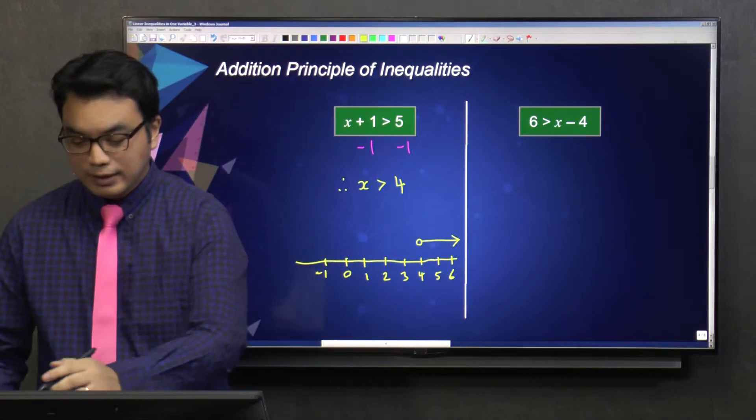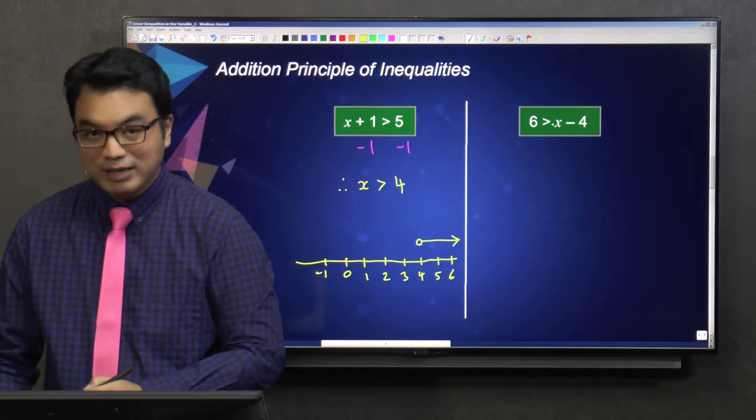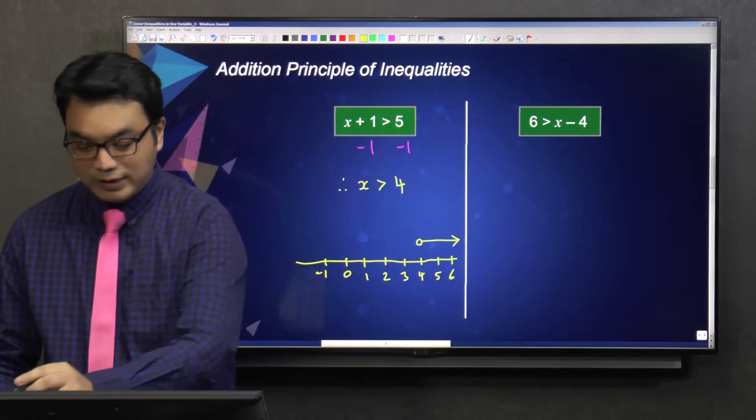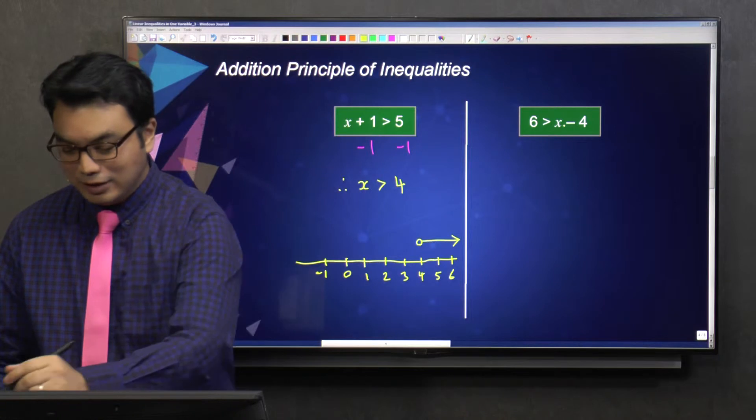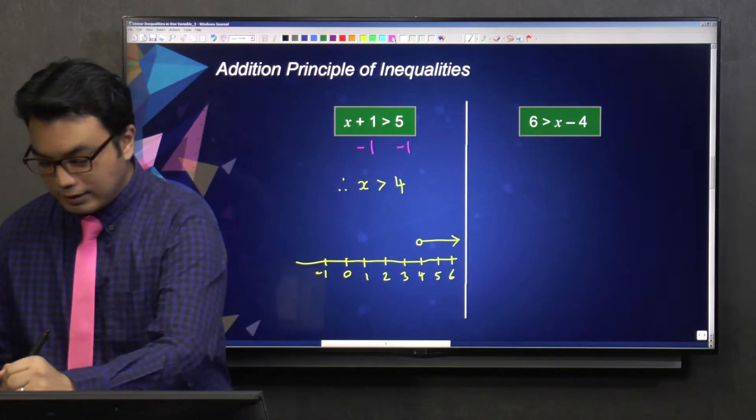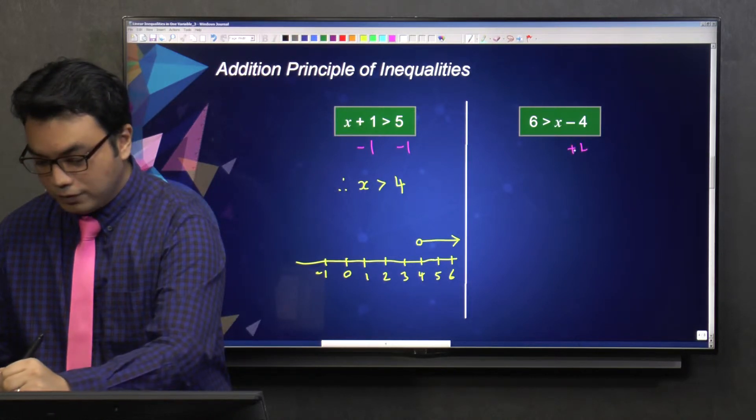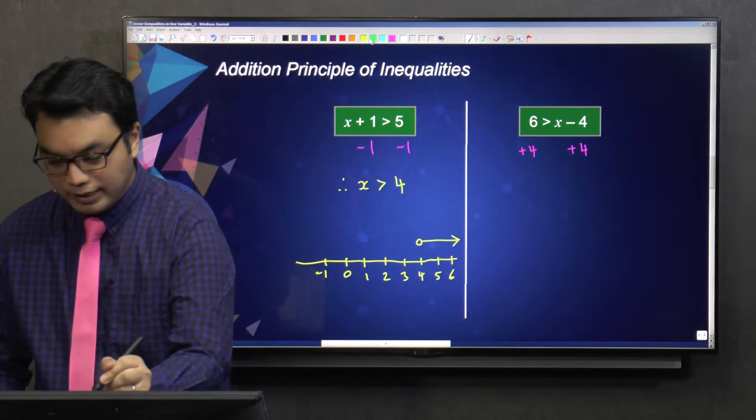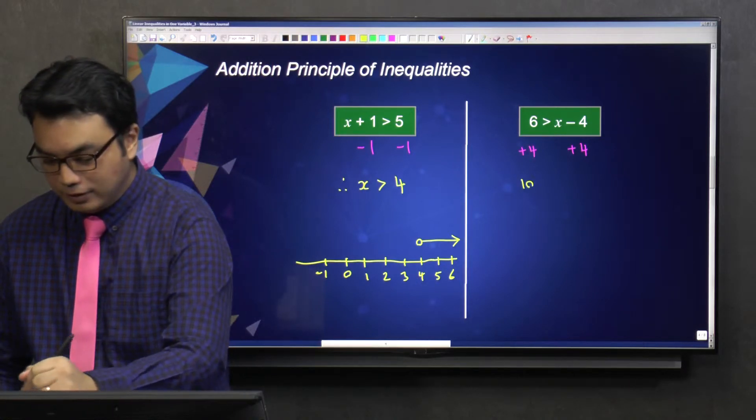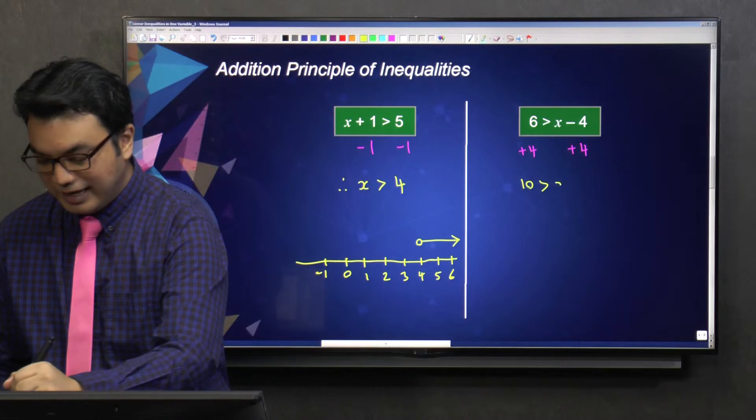Let's try the next one. 6 is greater than x minus 4. If you realize x is on the right hand side. So let's add 4 on both sides. So what do we have? We have 10 greater than x.